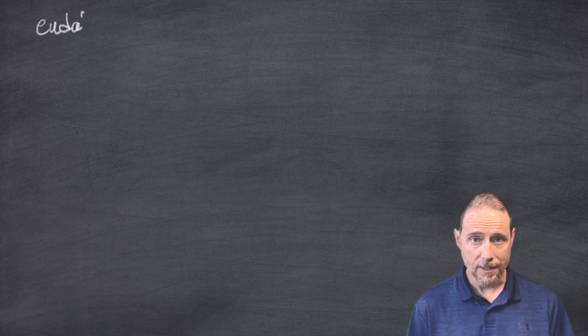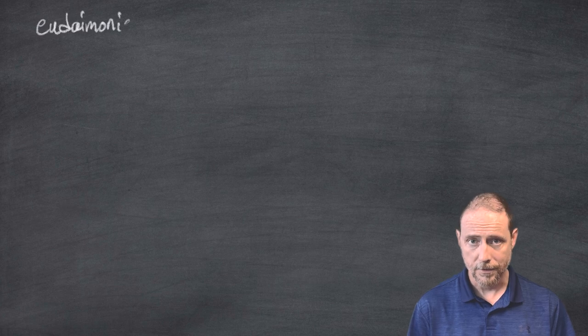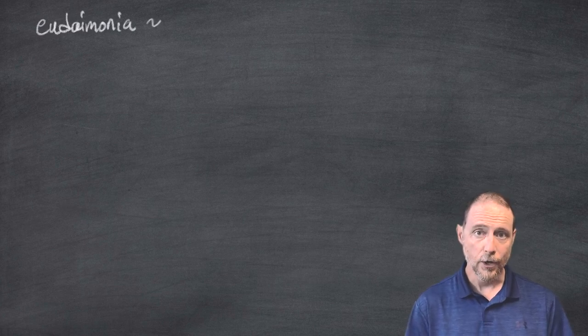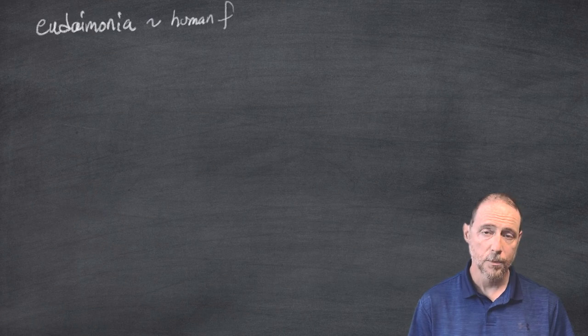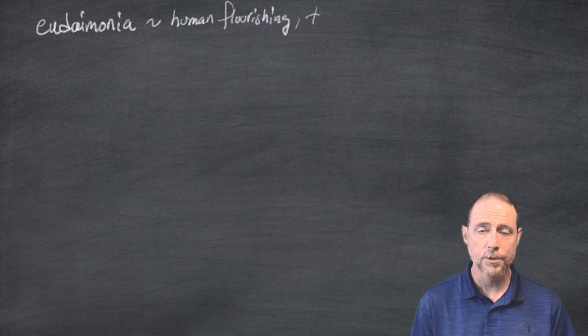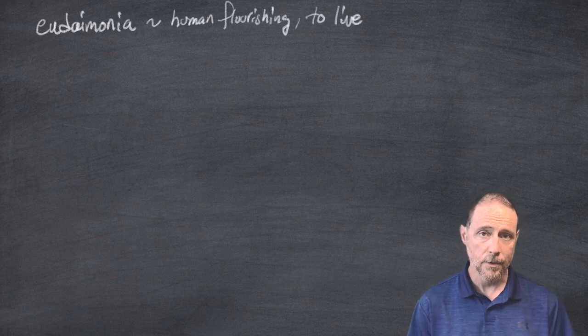Eudaimonia means something like human flourishing, to live well. And unfortunately, in some translations, we get happiness. And people will say, well, happiness isn't the purpose of human life. That's not deep at all. There's got to be more to it than that. Well yeah, and that's not what Aristotle meant.